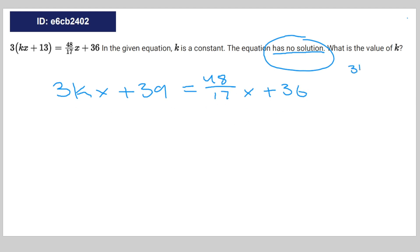So it's going to be 3kx is equal to 48 divided by 17x. You can cancel out the x's, so 3k is equal to 48 divided by 17, which means that k is equal to 48 divided by 51.